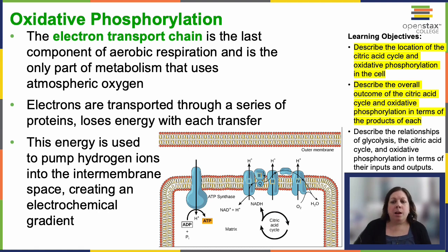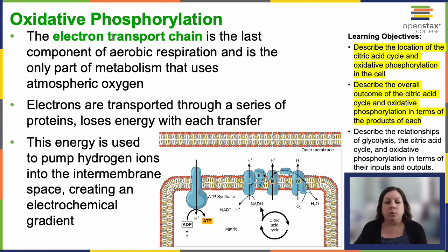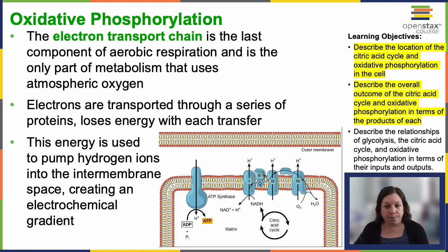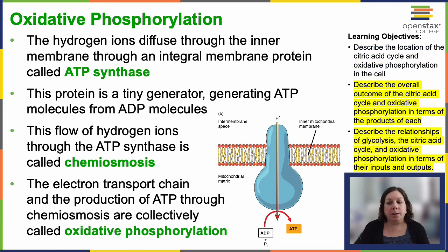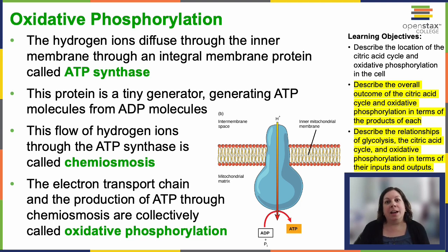The electron transport chain is the final part of aerobic respiration. It transfers electrons, and with each transfer the electron loses some of its energy. This loss of energy is used to pump hydrogen ions across the inner mitochondrial membrane, creating an electrochemical gradient. Oxygen acts as the final electron acceptor, combining with hydrogen ions to form water. The movement of hydrogen ions across the membrane powers ATP synthase — an enzyme that synthesizes ATP.